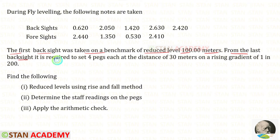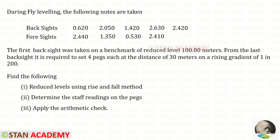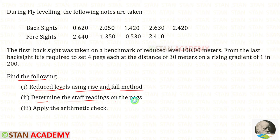From the last backsight, it is required to set four pegs, each at a distance of 30 meters, on a rising gradient of 1 in 200. Find the reduced levels using the rise and fall method. Determine the staff reading on the pegs. Apply the arithmetic check.